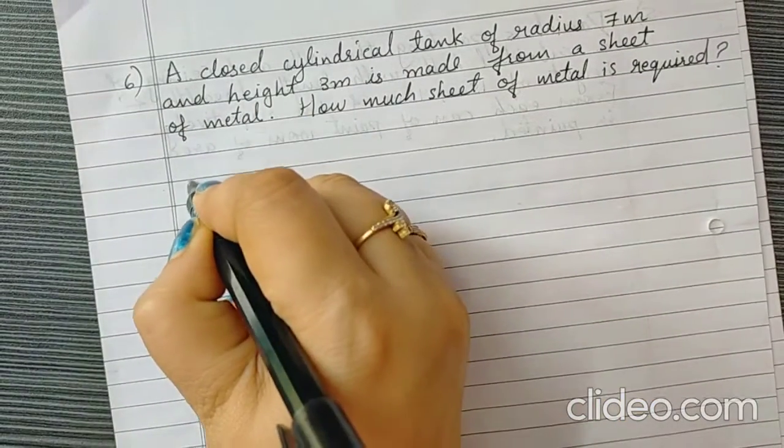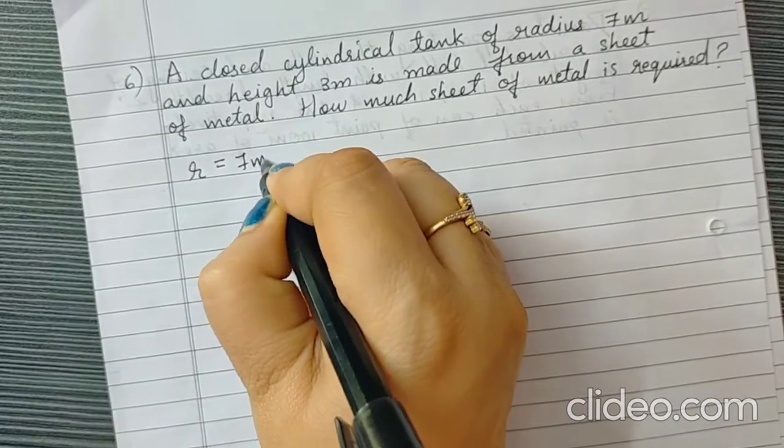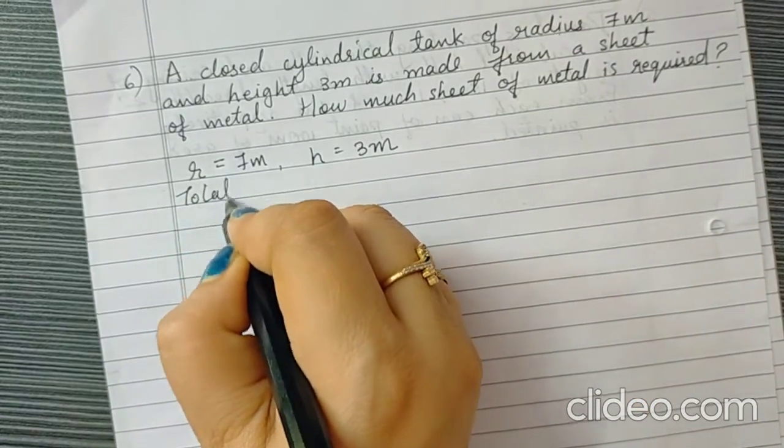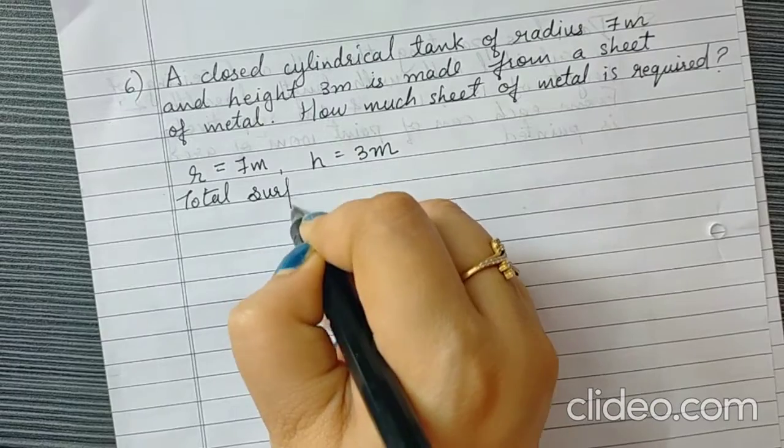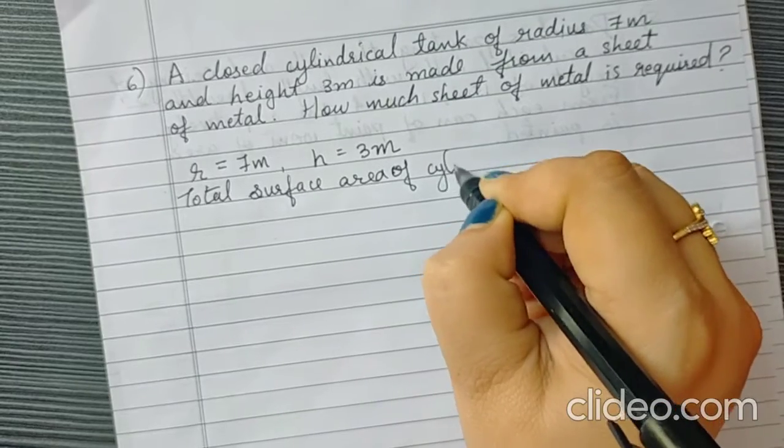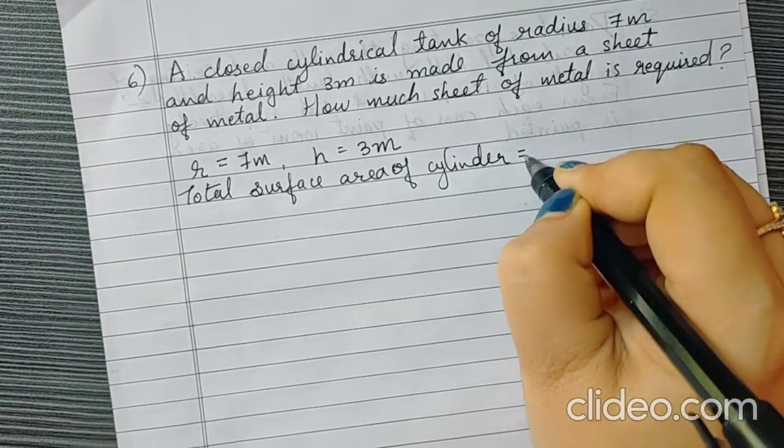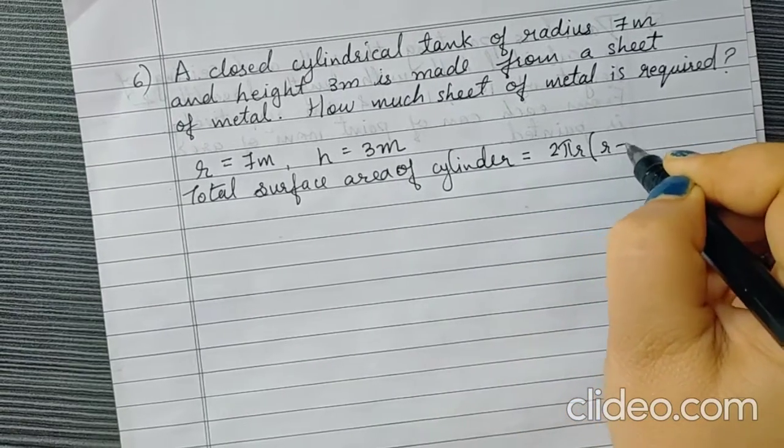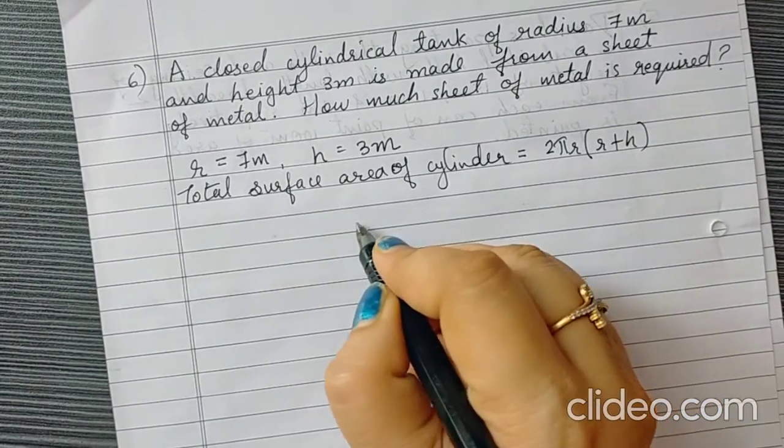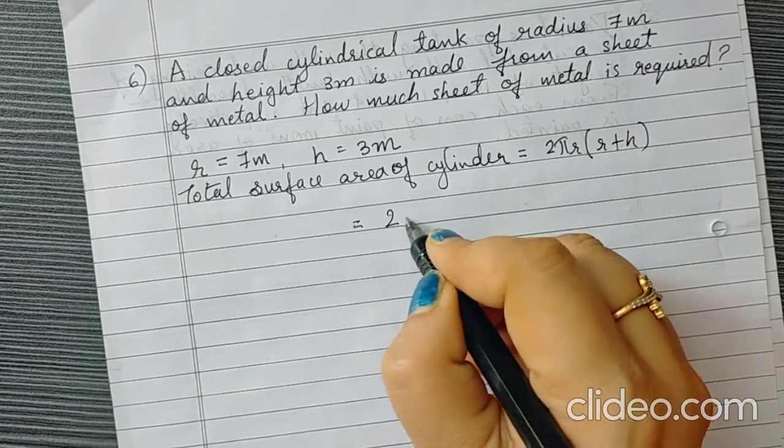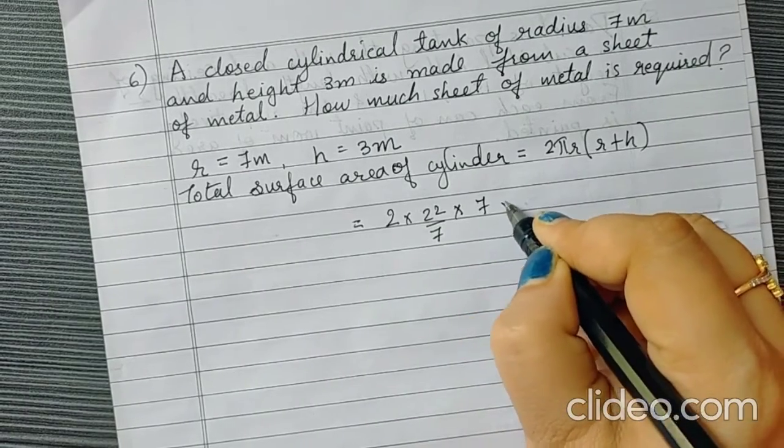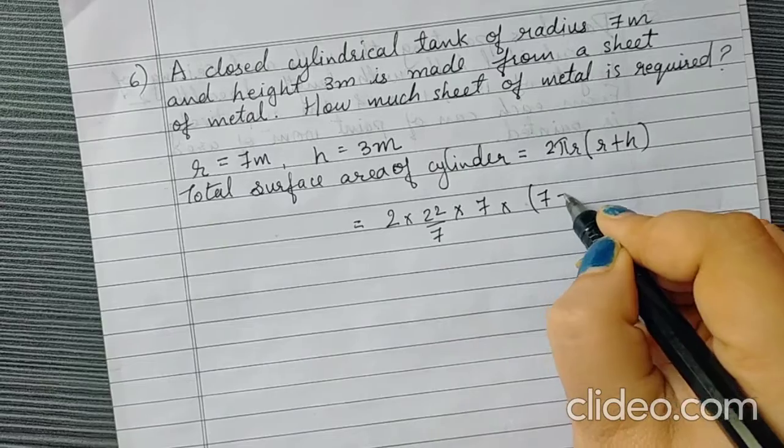We are given the measurements: R, that is radius which is 7 meter and height which is 3 meter. So total surface area of cylinder, we'll use the formula. It is 2πR into R plus H. This is the formula to calculate total surface area of cylinder. Let us put up the values. 2π is 22 upon 7 into R which is 7 into R plus H, that is 7 plus 3.